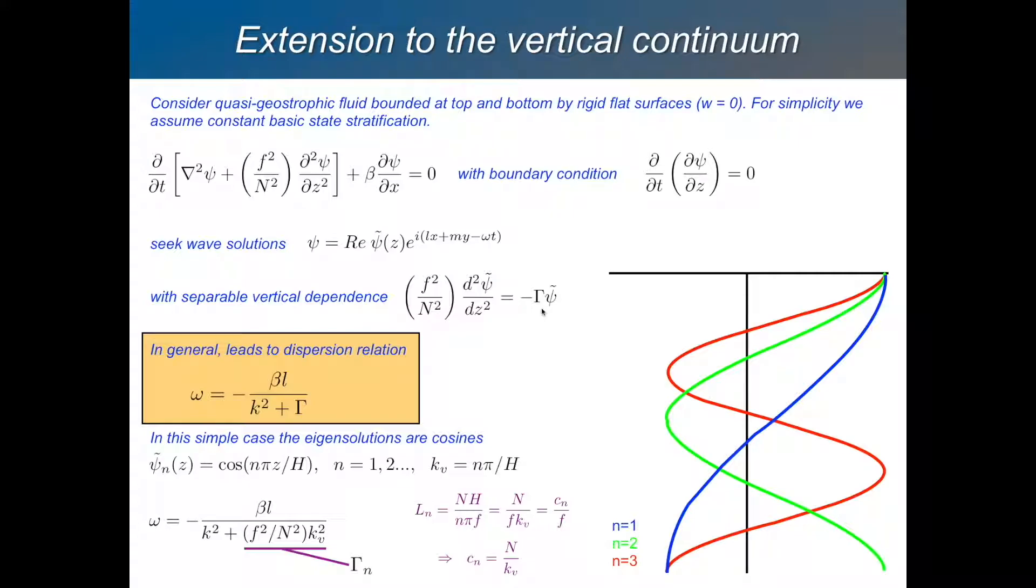First of all, this equation, these are eigenfunctions in the vertical. And that's very simple. They're just cosine functions. The solutions to this equation are just these cosine functions. The first one is this one, which is just half a wave. The second one, so that's the first mode. The second mode is a full wave in the vertical. This is the third mode, one and a half waves in the vertical. So these are our modes.